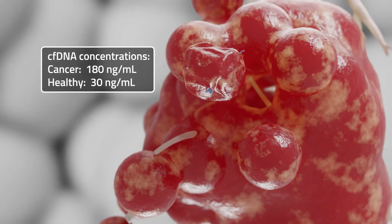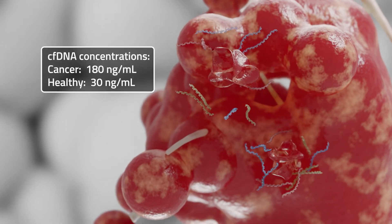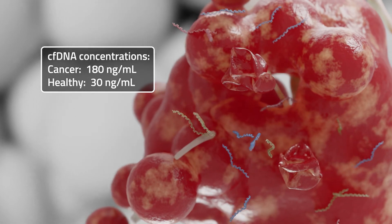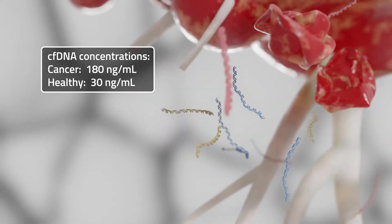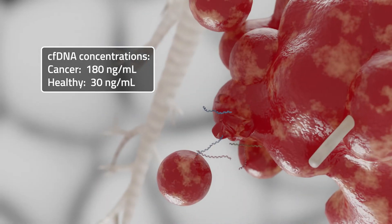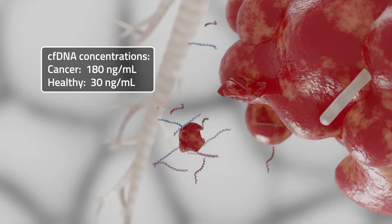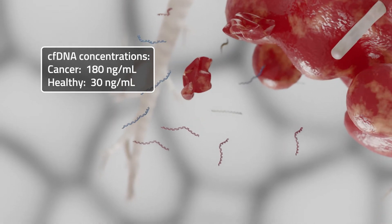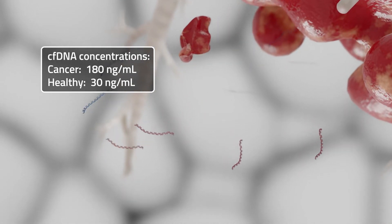Indeed, data have shown that cfDNA concentration in the blood of patients with cancer averages 180 nanograms per milliliter and can approach 1,000. This is compared to an average of 30 nanograms per milliliter and the high end of 100 nanograms per milliliter in healthy subjects.